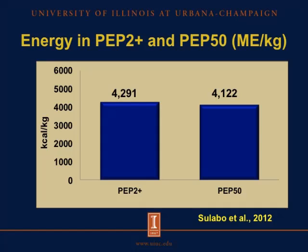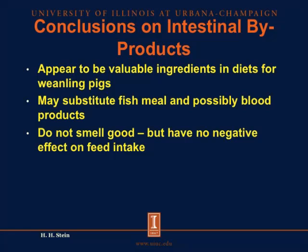The energy concentration in PEP2 Plus and PEP50 was recently determined. PEP2 Plus contains 4,291 kcal per kilogram, and PEP50 contains 4,122 kcal per kilogram. Both of these ingredients have a relatively high concentration of energy, which makes them attractive in diets fed to weaning pigs. To conclude on intestinal byproducts, these products appear to be valuable ingredients in diets fed to weaning pigs. They may substitute fish meal and possibly blood products. One drawback is that they don't smell very good; however, that does not appear to have any negative effects on feed intake of the pigs — the bad smell is only an issue for the people working with these products.